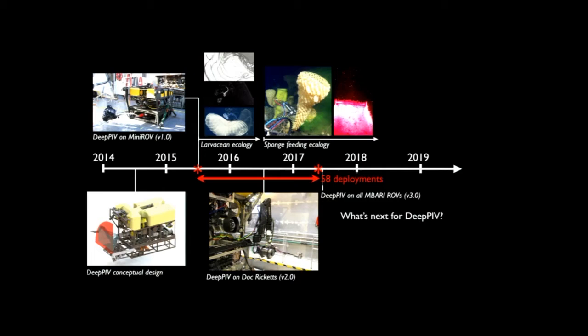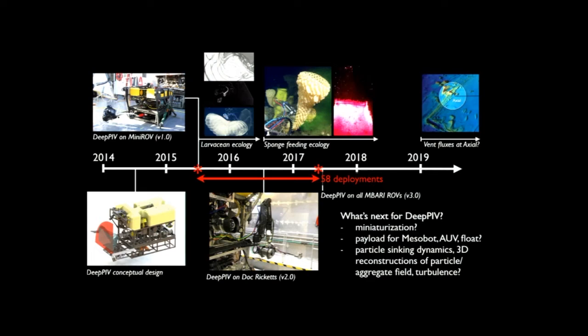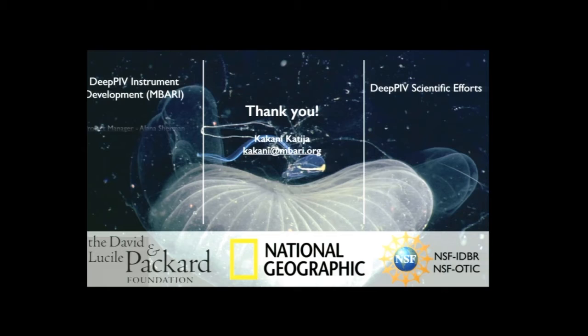Looking at what's next for DPIV: beyond biological flows already being studied, there are open questions about physically driven flows. A collaboration with David Butterfield at NOAA and Chris Algar at Dalhousie is underway to constrain vent fluxes using this instrument. With further miniaturization, other payloads or platforms could be envisioned for this device.